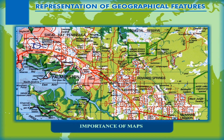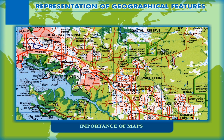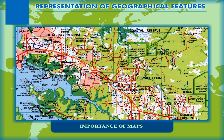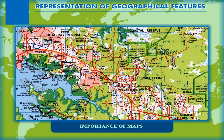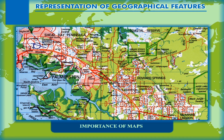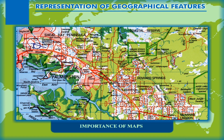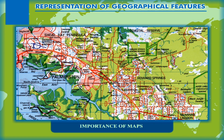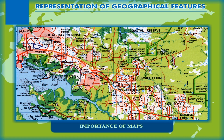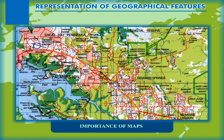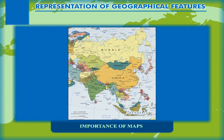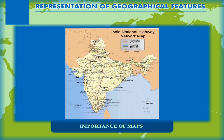Geographical maps represent the whole Earth or any part of it on paper or any flat surface. Maps provide a variety of information about any area. Thus, they are classified into various types. Maps are generally classified into three types: physical maps, political maps, and thematic maps.